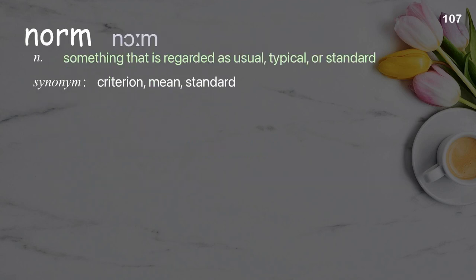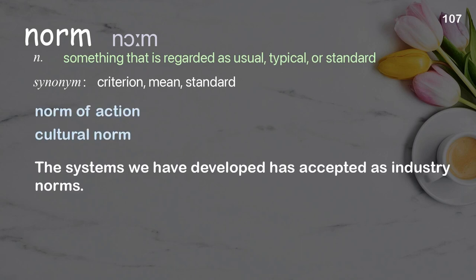Norm: something that is regarded as usual, typical, or standard. Examples: norm of action, cultural norm. The systems we have developed have been accepted as industry norms.